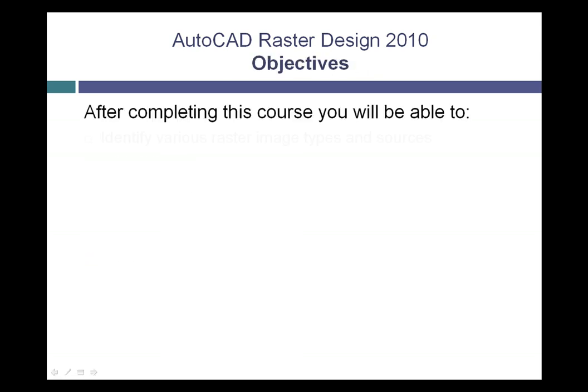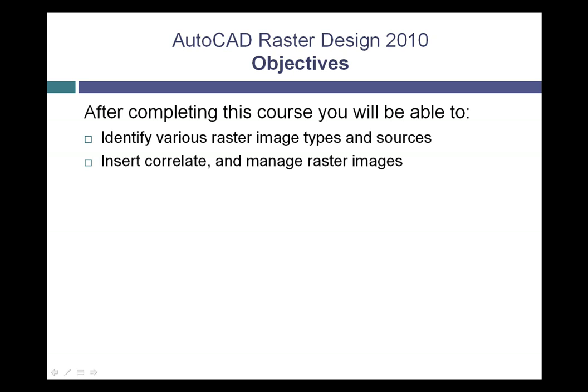Now, there are a number of things that you'll be learning as part of this class. For example, you'll learn about the different raster image types and how to acquire these. You'll learn how to work with raster images within the AutoCAD drawing environment. If you're working with scanned information, how to fix any errors that may have occurred during the scanning process prior to using these raster images for conversions, editing, or printing purposes.